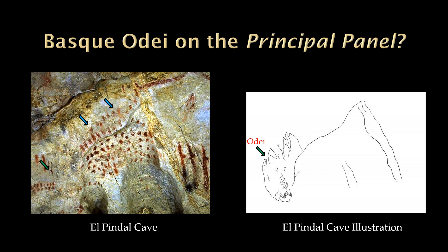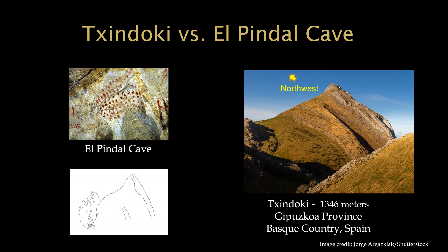This character has the impression of the wind. I believe that this character is a representation of the Basque Odi, who is the spirit of thunder and the personification of storm clouds. If one slowly whispers the name Odi, the sound has some resemblance to the wind. Odi is an agent of the Basque deity Mari, who dwells in a cave on the mountain Chindoki, which has lines that closely resemble the El Pindal panel. My pronunciation of Basque names is not likely correct, but they are spelled correctly in this presentation.